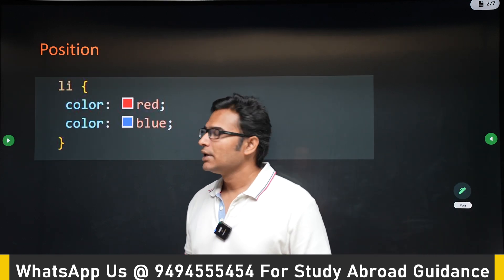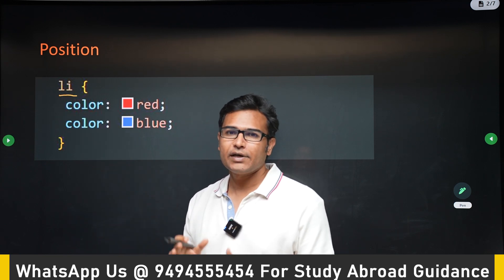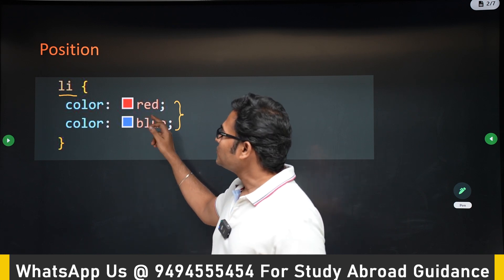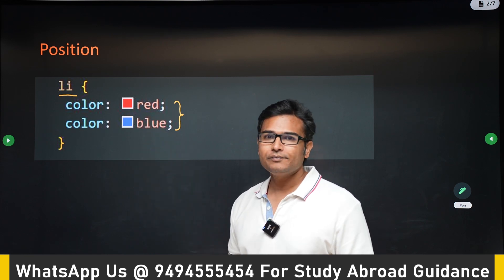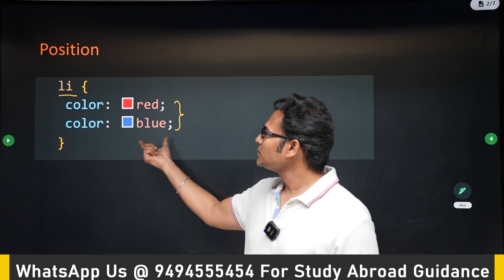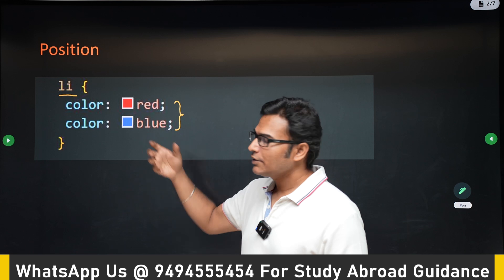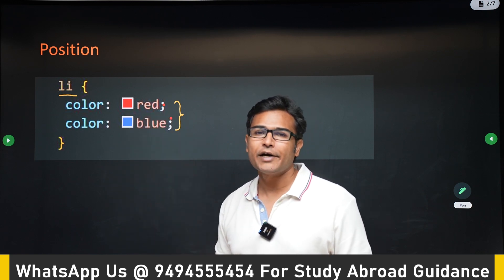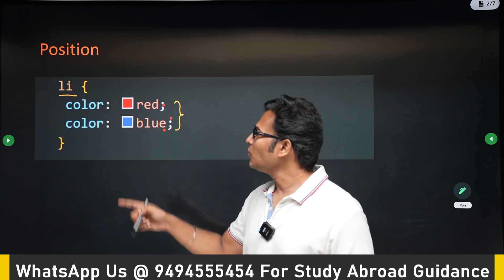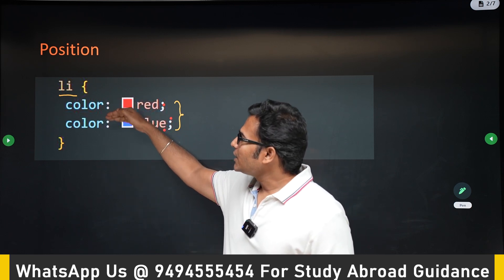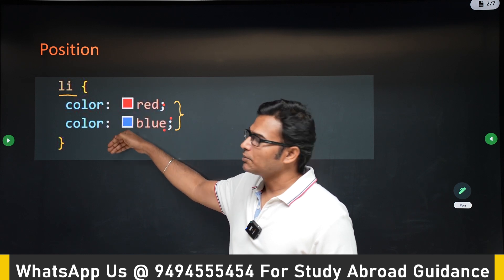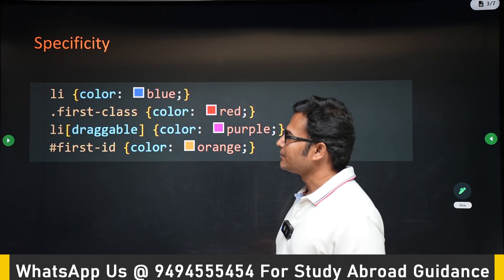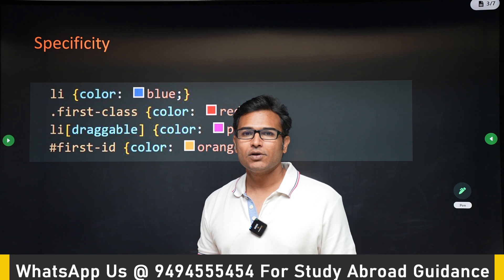There are various rules for precedence. The first rule is position. If there is an element and color is applied two times — one is red and the other is blue — what will the element get? You go by position: whichever has occurred last will get applied. So the element will get a color of blue. Whichever style appears last in the CSS gets higher priority when the same style is applied twice.